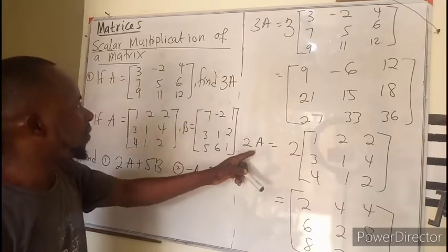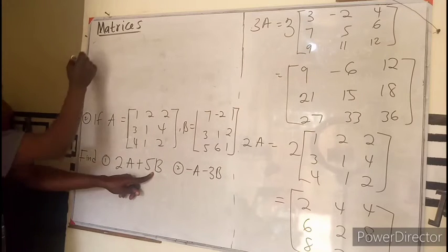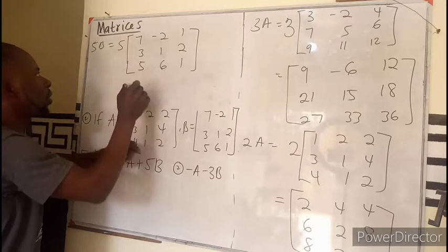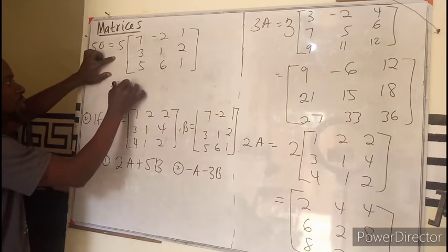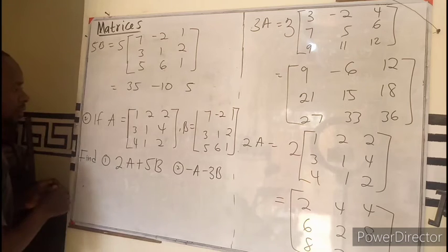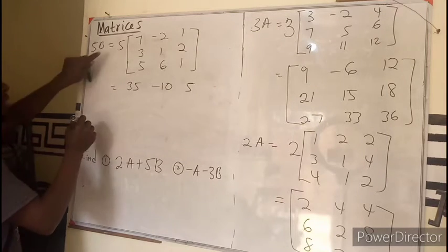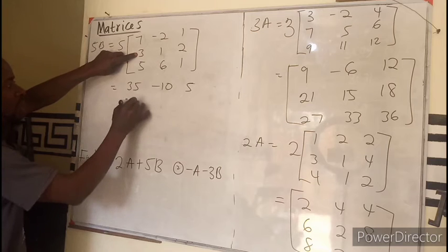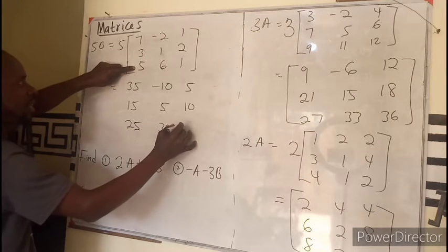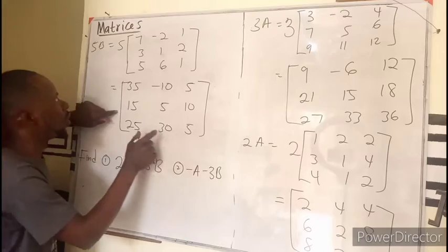So that will give us the first aspect. The second aspect is going to be 5 multiplied by B, so 5B, which will be 5 multiplied by vector B. So 5 will multiply this to give you [35, -10, 5]. Then 5 times the middle will be [15, 5, 5]. 5 times this: [25, 30, 5].